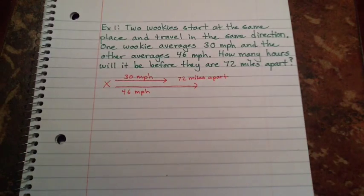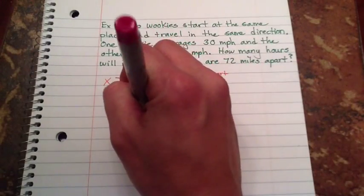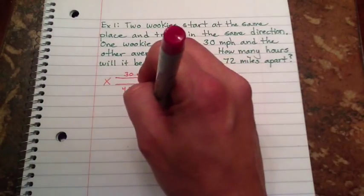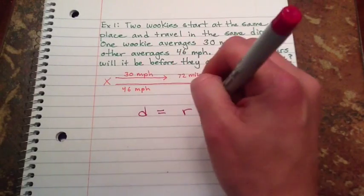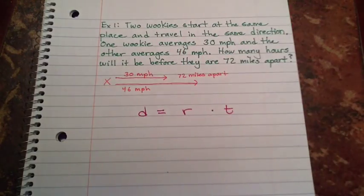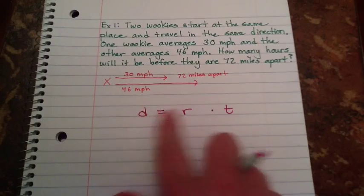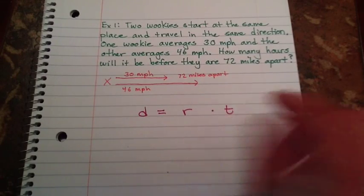Alright, let's go set up a chart and figure out how to do this. You're going to set up your charts almost like your mixture problems. Distance equals rate times time instead of the mixture that you had, but it's the same idea where you have something to put up here that you're going to fill in every time.